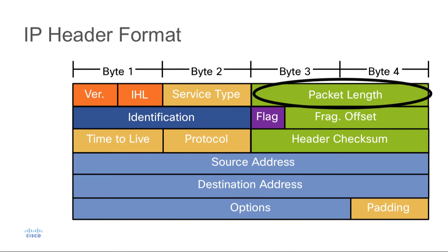The next field is the packet length. This is the entire length of the packet — it includes the 20-byte IP header as well as all of the user data encapsulated inside. This field is 2 bytes long, and the maximum size an IP packet can be is 65,535 bytes.